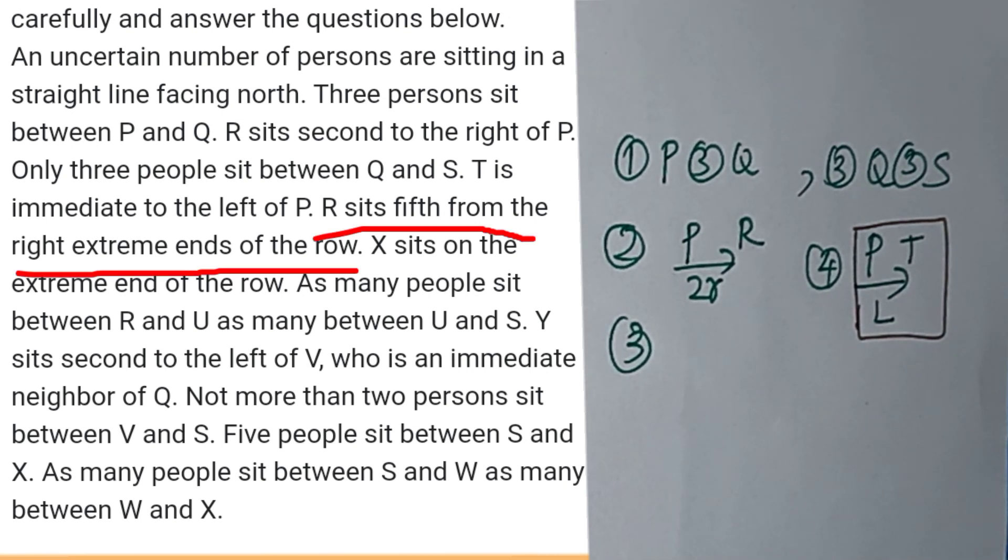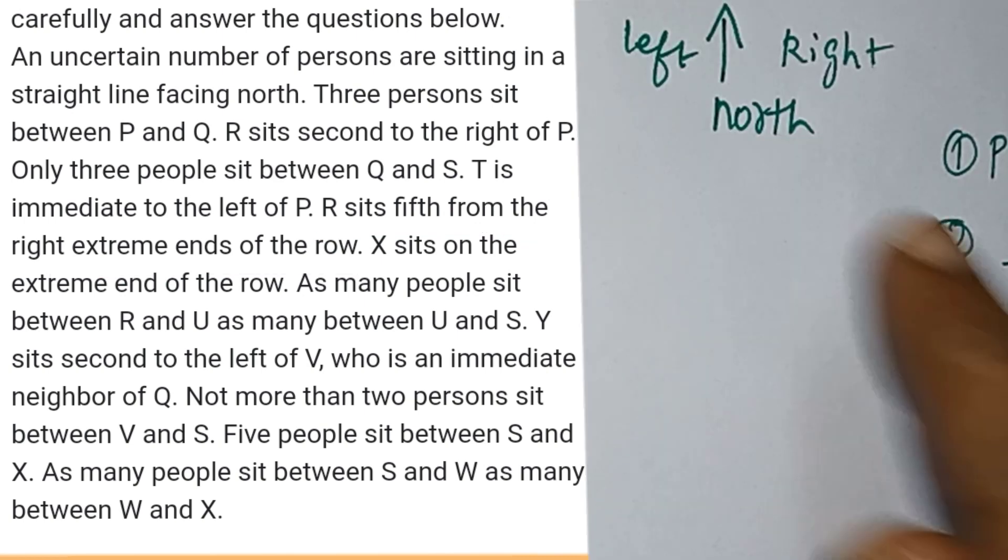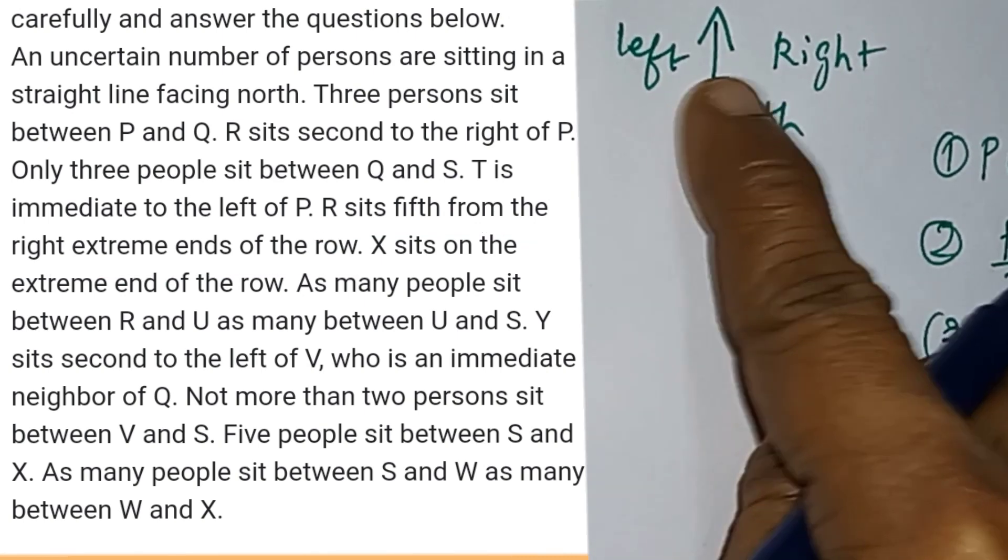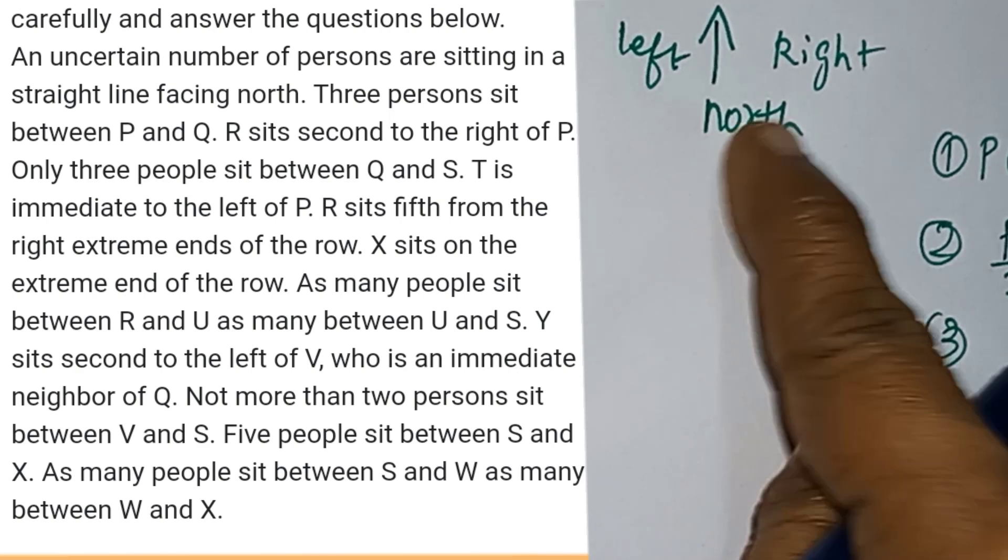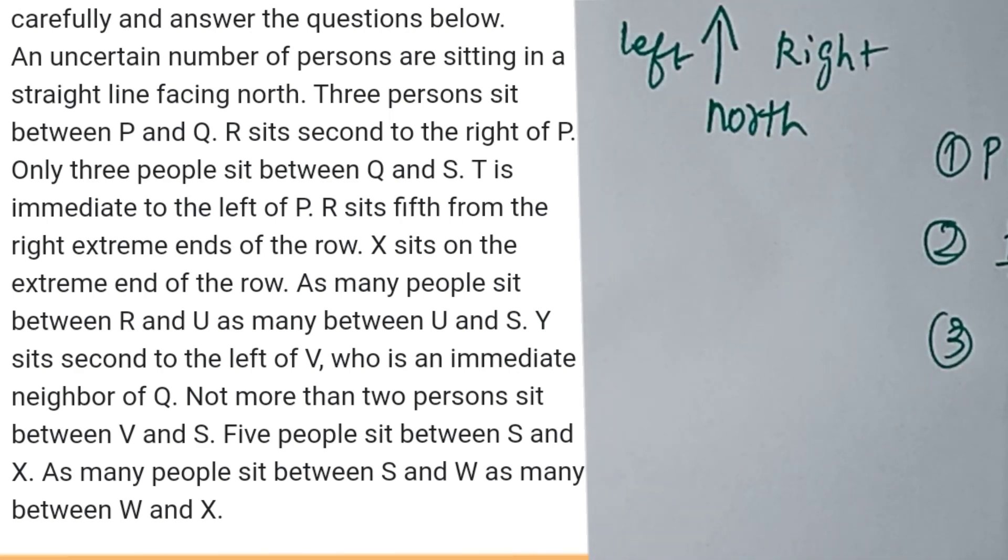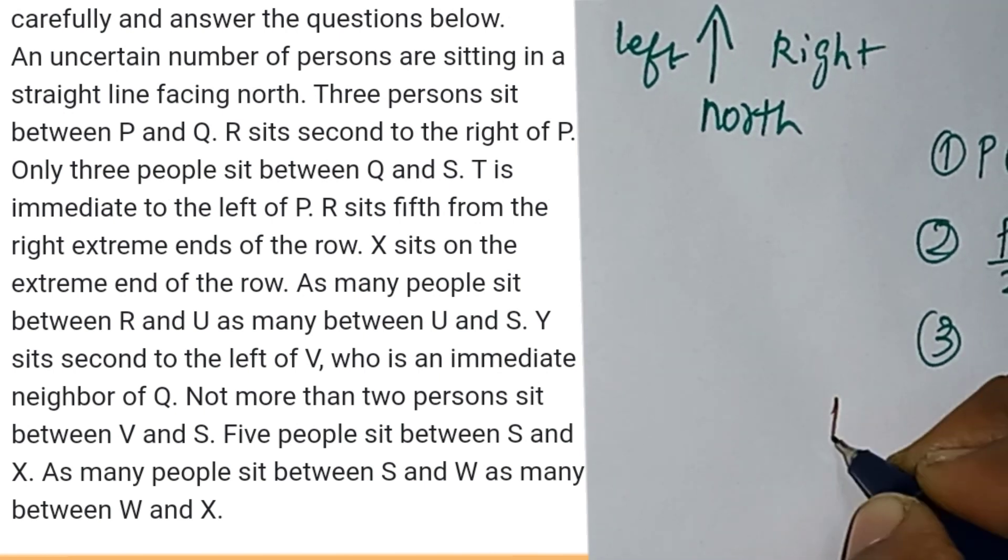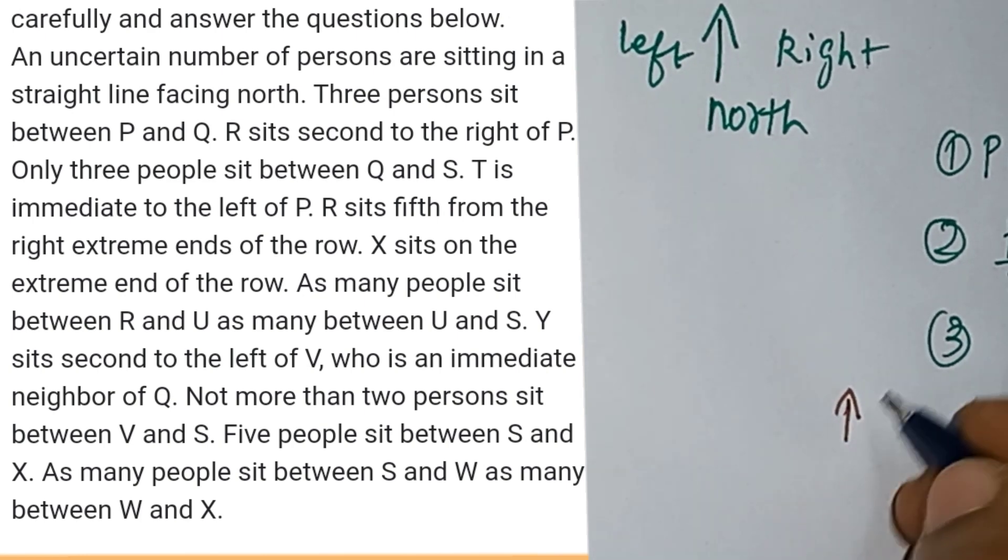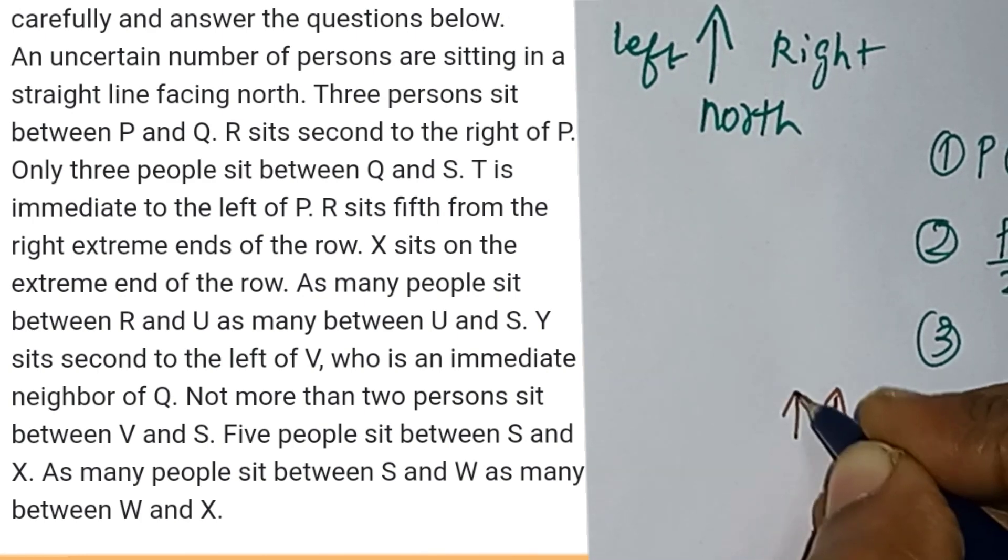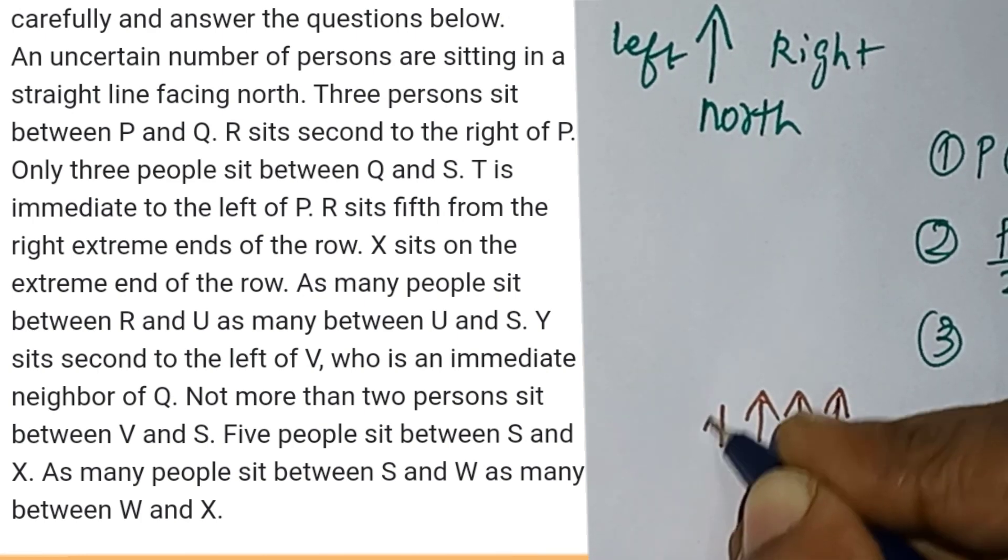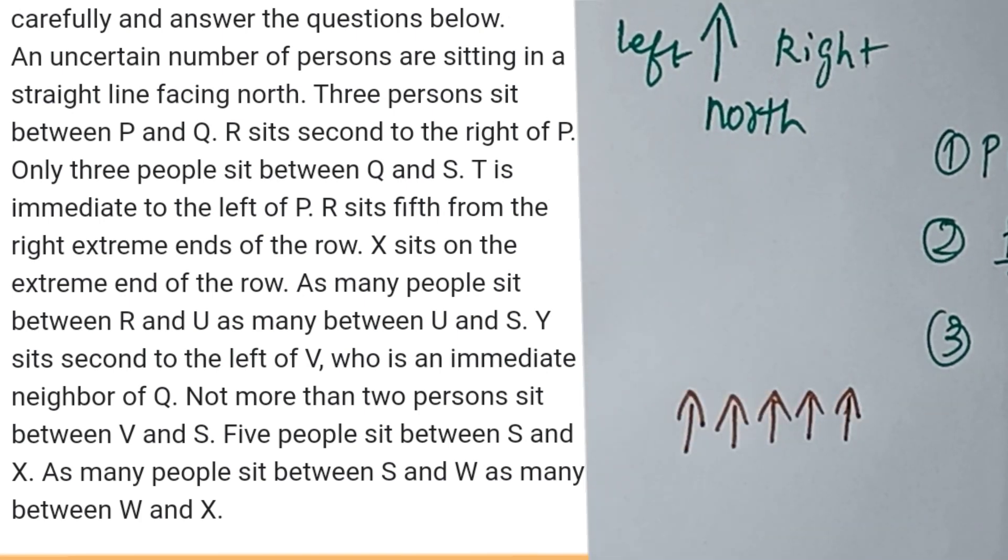The next point is R sits fifth from the right extreme end of the row. That is the north direction. The left side is the right and left side. Here are the end. There are fifth. That one will be for example the north direction - first right, second right, third right, fourth right, fifth right. There is a person who is on the left.